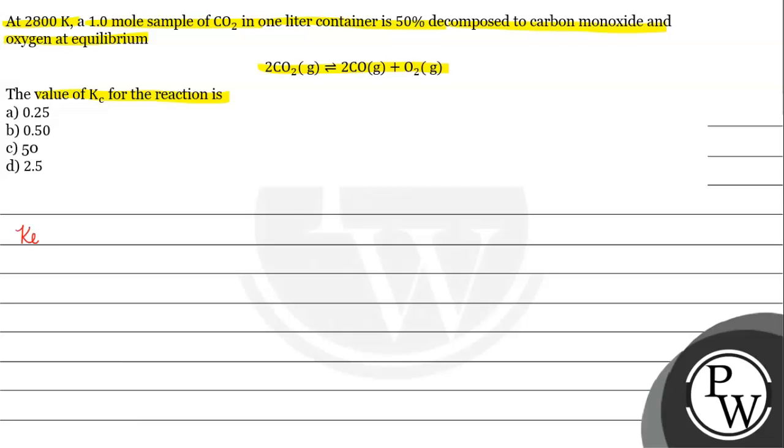The key concept for this question is: suppose we have a reaction where a mole of A plus b mole of B gives us c mole of C and d mole of D. For this reaction, if we have to find Kc, what is the concept of Kc? Kc equals the concentration of C to the power c, times concentration of D to the power d, divided by concentration of A to the power a, times concentration of B to the power b.